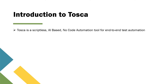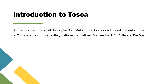It uses artificial intelligence and different technologies to identify all the elements on your application. It is also a continuous testing platform that delivers fast feedback for agile and DevOps. You can integrate your Tosca test automation suite with a CI/CD tool like Jenkins, which will deliver fast feedback for your agile development teams and help you integrate testing within a DevOps environment.